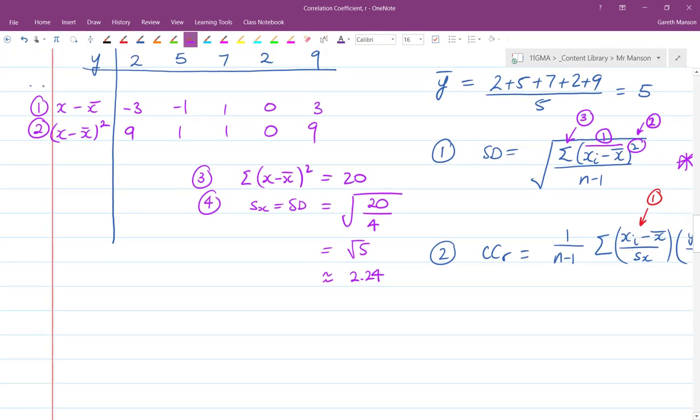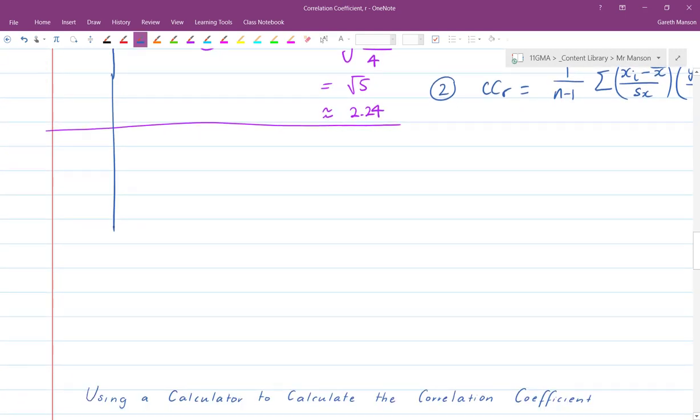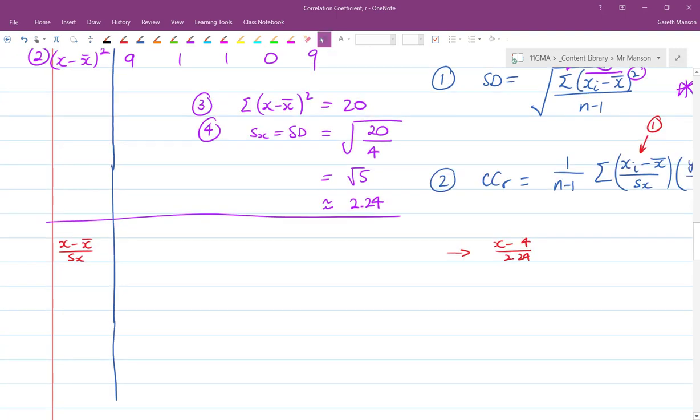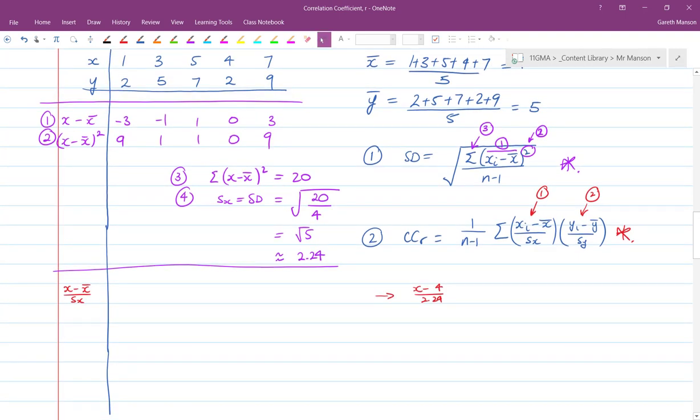So I'll extend this down a bit, and we'll start working red here. So the first thing I need to do is x minus x bar over Sx, which is going to be x minus 4 over 2.24. I want to be as accurate as possible though, so I'm going to use this 2.24 in my calculator, which is the square root of 5. So x minus 4, what was my x? 1 minus 4 is negative 3 over root 5. Negative 3 divided by root 5 is equal to negative 1.34.